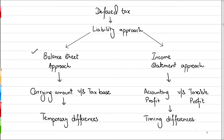Within the liability approach we have two approaches: the balance sheet approach and the income statement approach. In the balance sheet approach, we compare the book value or carrying amount of assets or liabilities with their tax base. The difference between the carrying amount and the tax base is known as the temporary difference, whereas the same difference from the income statement approach — the difference between accounting profit and taxable profit — is known as the timing difference. We will focus on the balance sheet approach going forward.